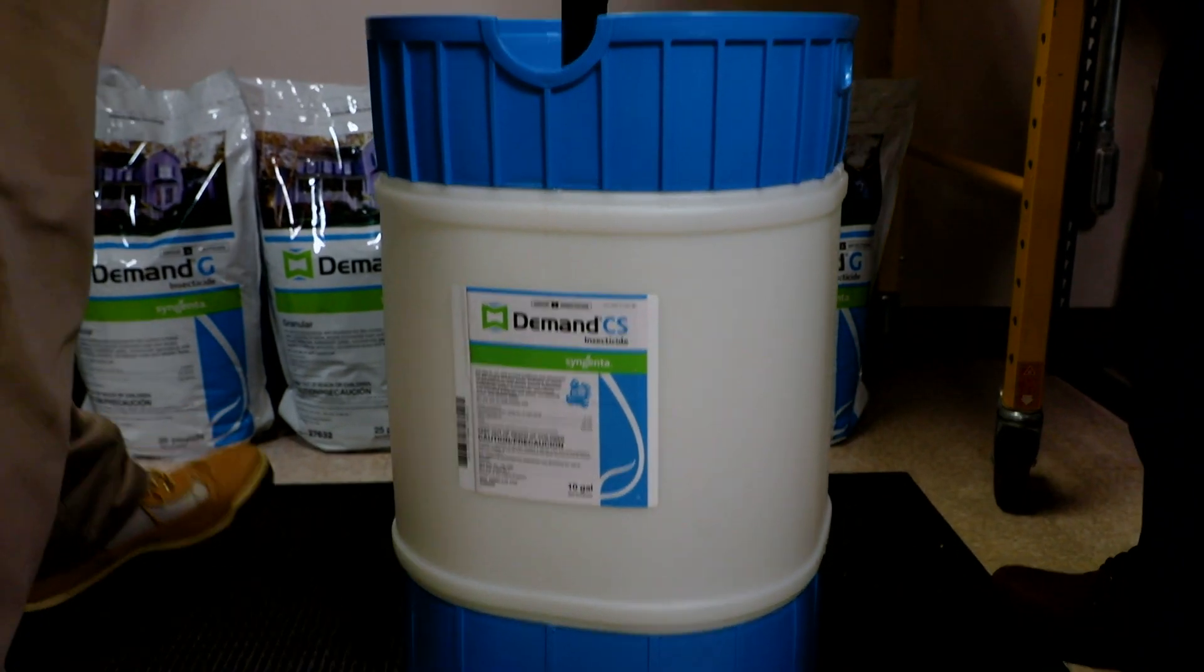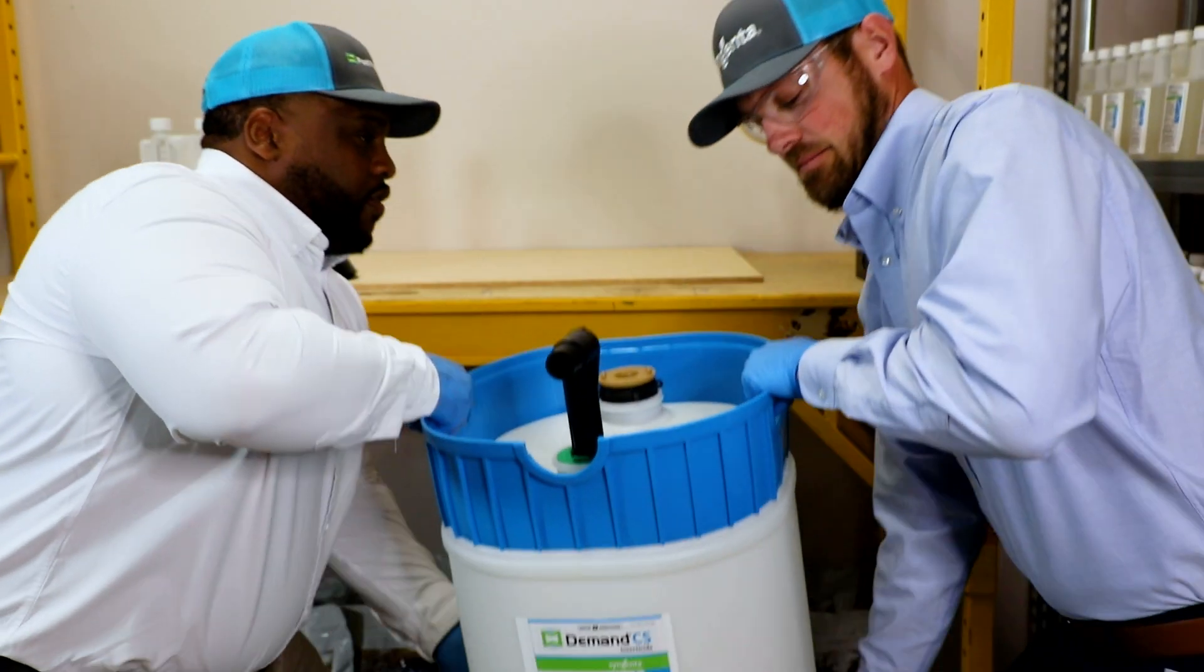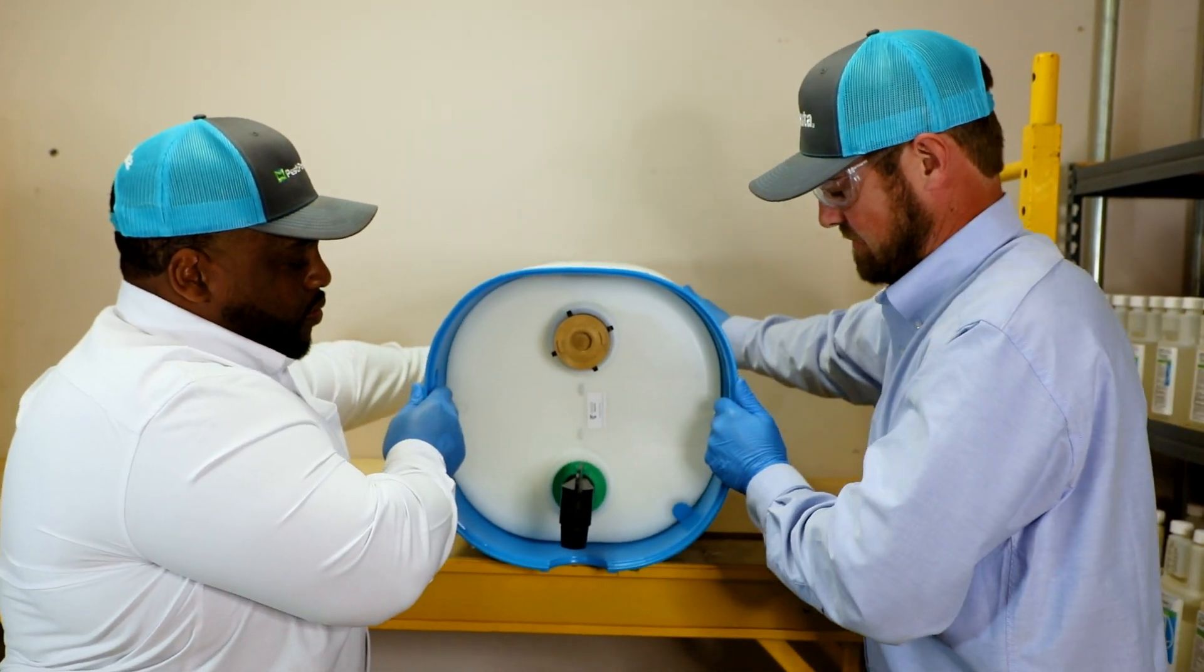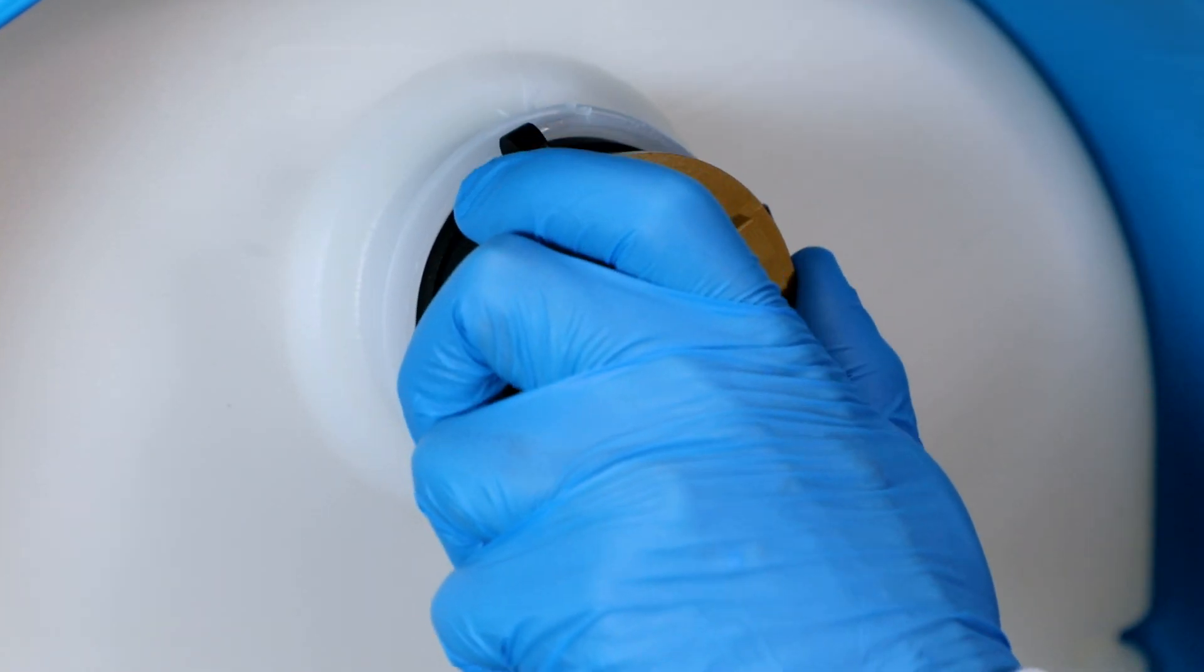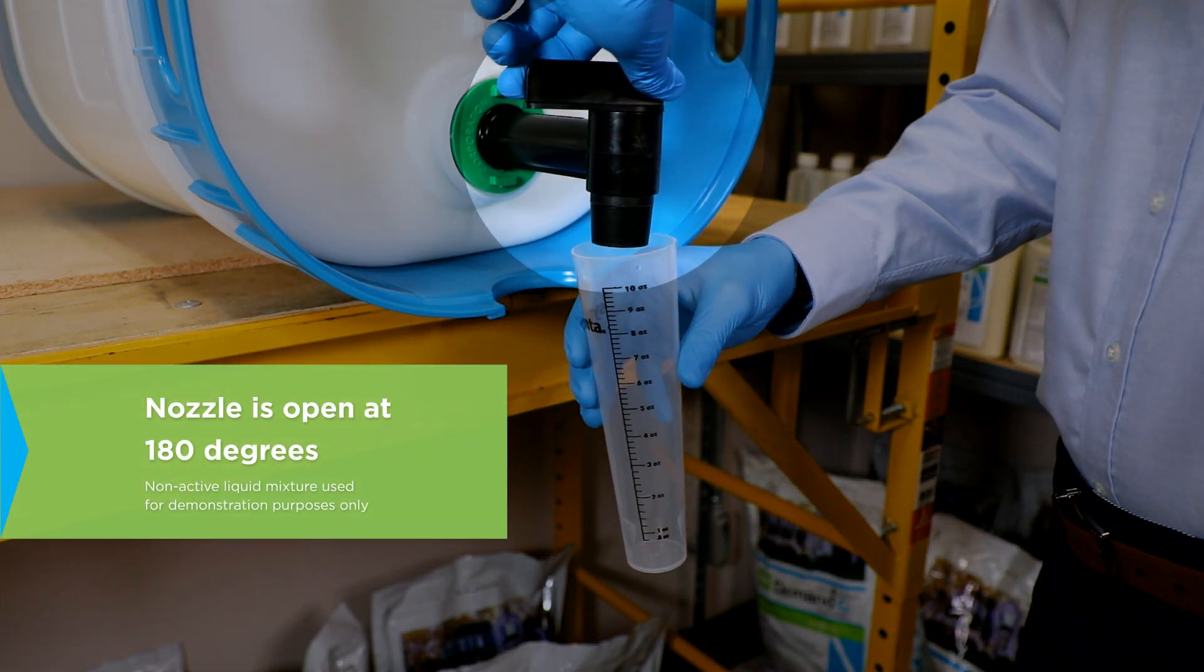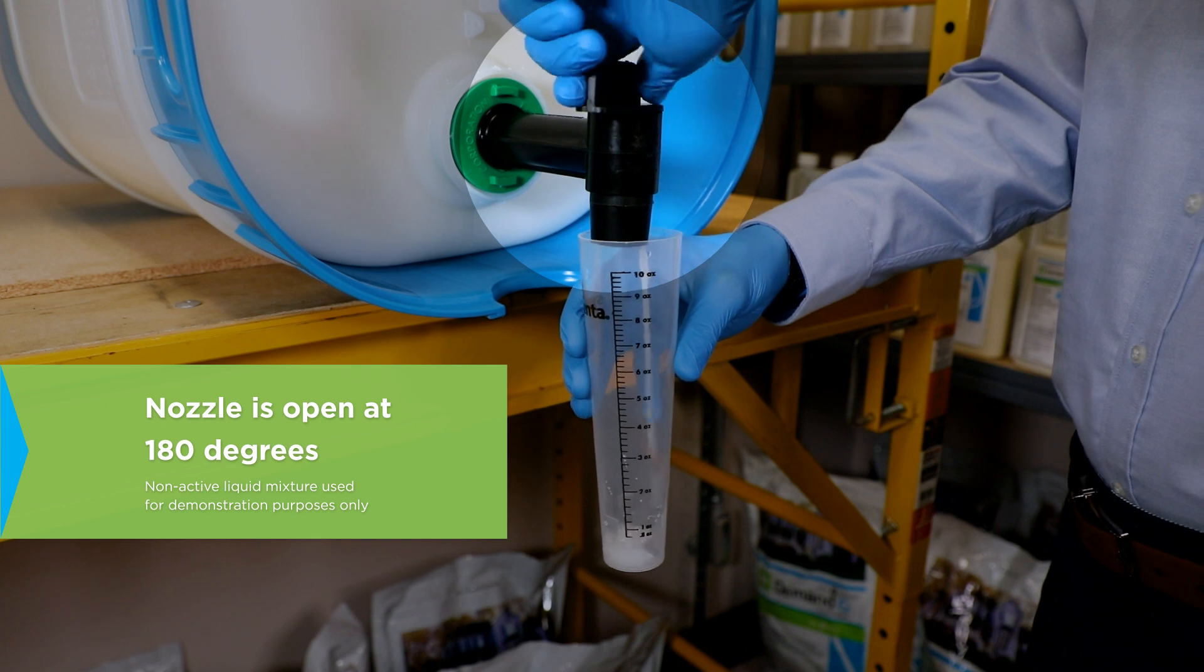To prepare for gravity-fed dispensing, place the drum on a flat surface. Slightly vent the impeller cap for easier flow of product. The dispenser valve is open when it is turned 180 degrees to point toward the dispenser opening.